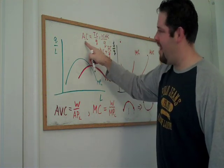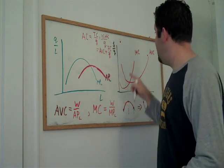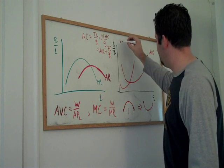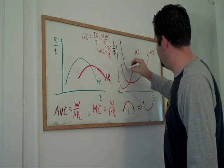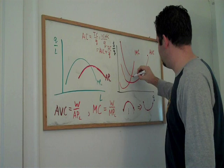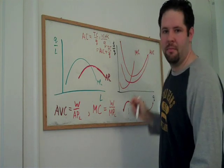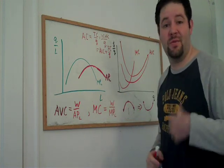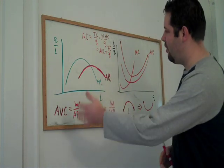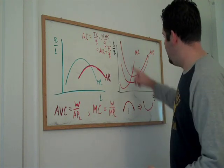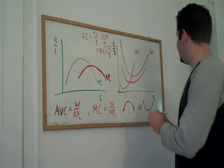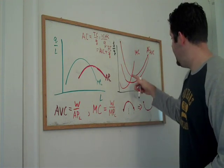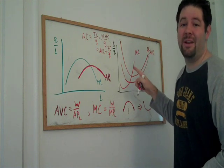Notice also that average cost is an average, so we'll have the same relationship with this marginal cost curve. Average cost is asymptotically approaching the average variable cost. As Q increases, average cost and average variable cost become indistinguishable because those fixed costs get averaged over a larger quantity. Average cost intersects marginal cost at its minimum. Marginal cost goes right through the minimum of both average cost curves.